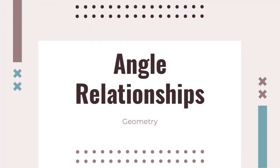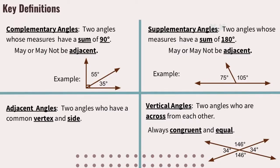Welcome back. Today we're going to be talking about angle relationships. Let's get started by taking a look at some key definitions. There are four major relationships we're going to focus on. Complementary angles are two angles whose measures have a sum of 90 degrees — they may or may not be adjacent. Supplementary angles are two angles whose measures have a sum of 180 degrees — they may or may not be adjacent. Adjacent angles are two angles that have a common vertex and side. And vertical angles are two angles across from each other — they're always congruent and always equal.